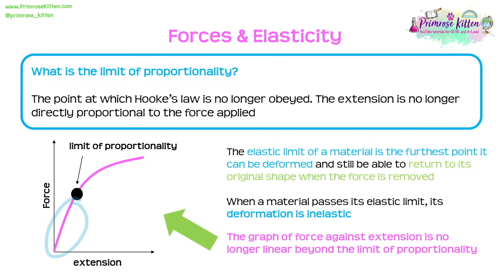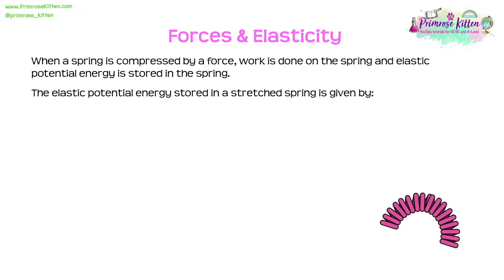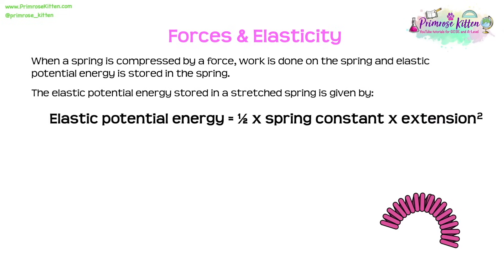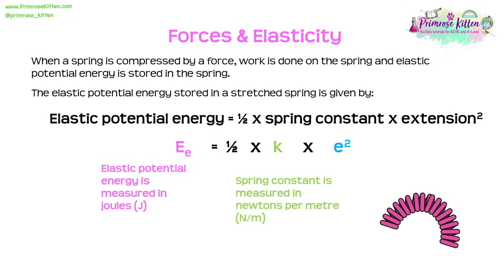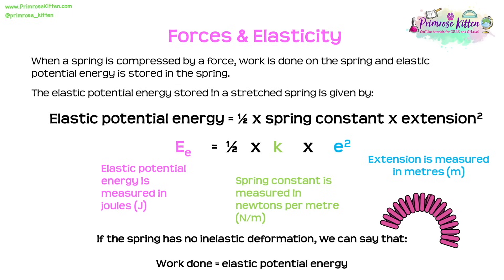The elastic limit of a material is the furthest point it can be deformed and still return to its original shape when the force is removed. When a material passes its elastic limit, its deformation becomes inelastic. When a spring is compressed by a force, work is done on the spring and elastic potential energy is stored. The elastic potential energy is given by: EE = ½ × k × e². Elastic potential energy is in joules, k in newtons per metre, and e in metres. If there's no inelastic deformation, work done equals elastic potential energy.